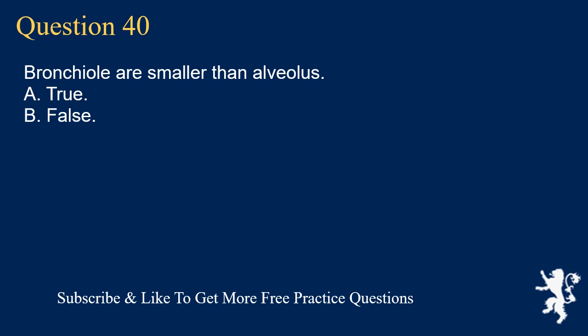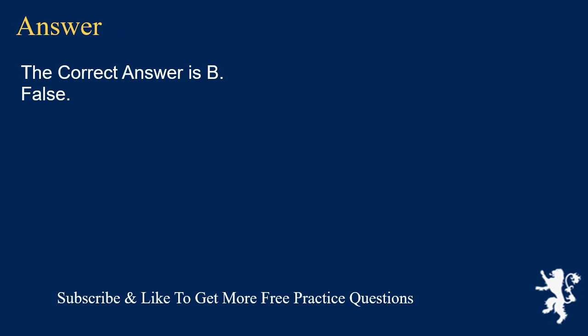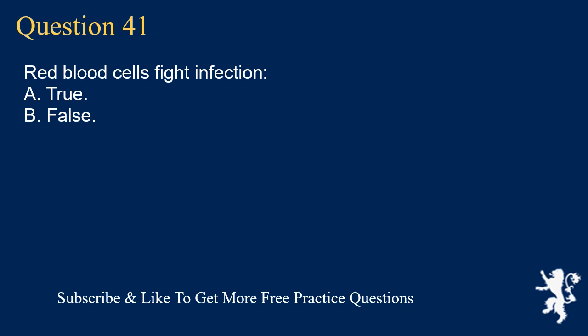Question 40. Bronchioles are smaller than alveoli. A. True. B. False. The correct answer is B. False.